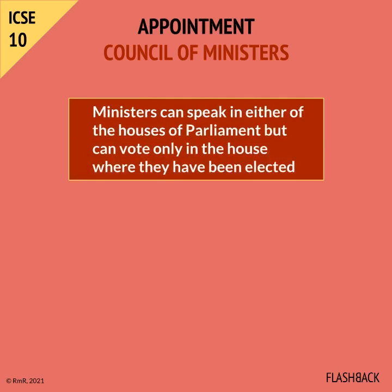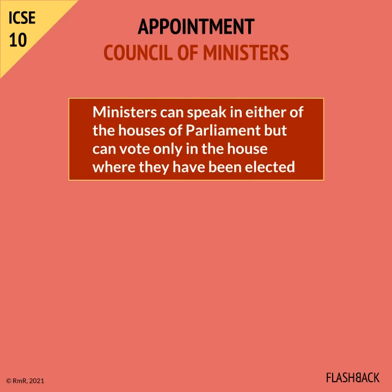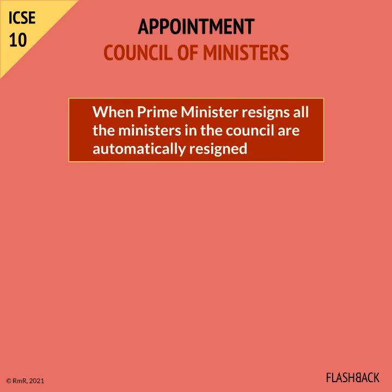A Minister can speak in either of the Houses of Parliament, but can vote only in the House where they have been elected. A Minister can resign, or the President can force a Minister to resign on the advice of the Prime Minister. When the Prime Minister resigns, all the Ministers in the Council are automatically resigned.